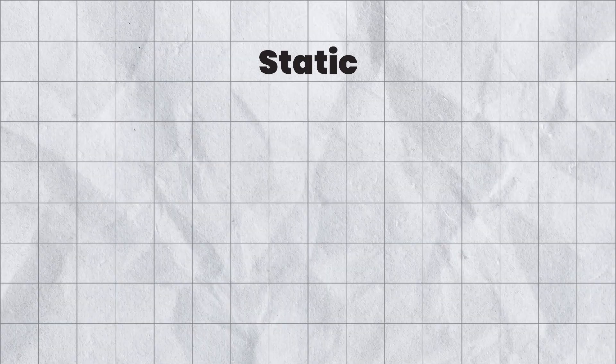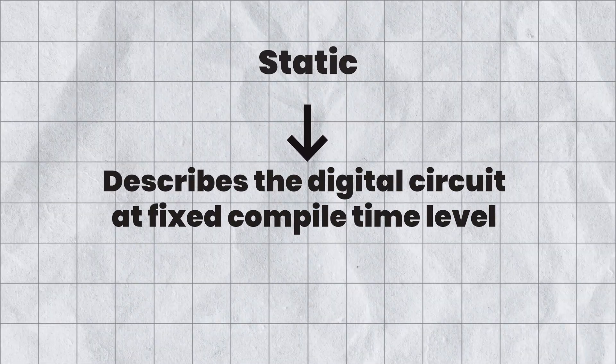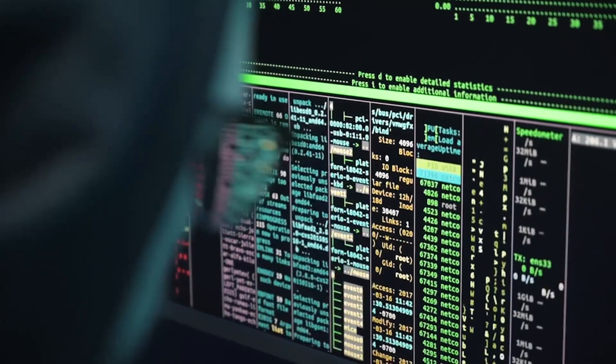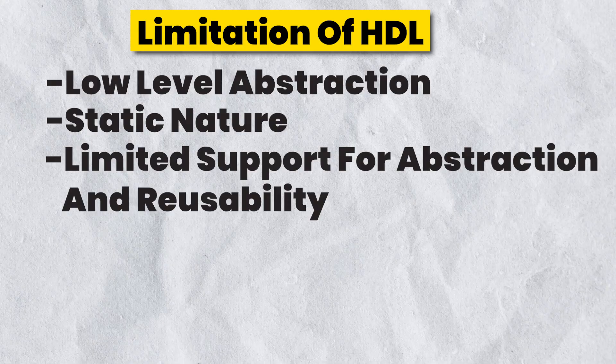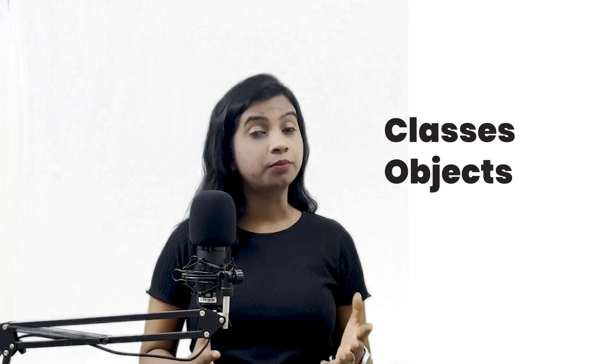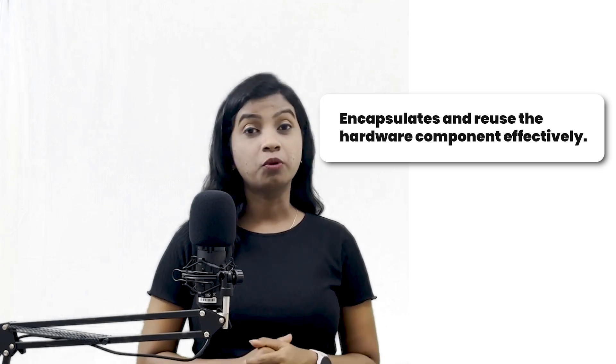This can lead to lengthy, error-prone, and difficult-to-manage code. Next is static nature: traditional HDLs are static, meaning they consume more memory and describe the digital circuit at a fixed compile-time level. You are not able to make any changes during simulation — the behavior and structure of the circuit are determined when you write and compile the code. Another limitation is limited support for abstraction and reusability: traditional HDLs like Verilog or VHDL lack robust support for abstractions commonly found in modern programming languages, such as classes or objects, making it challenging to encapsulate and reuse hardware components effectively.